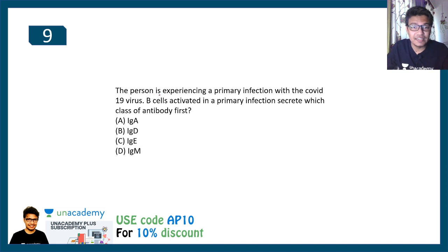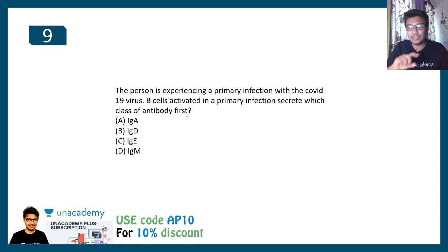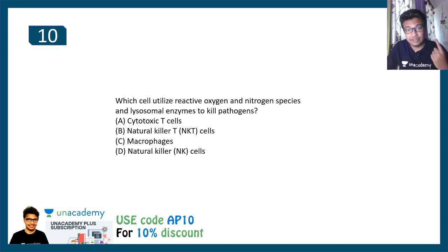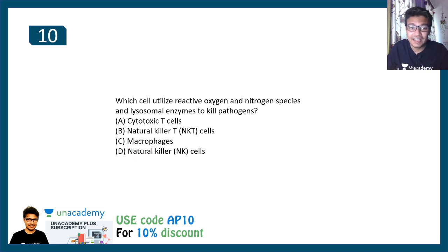Question nine: a person is experiencing a primary infection with COVID-19 virus. The B cells activated in the primary infection secrete which antibody first? We have already discussed this type of question previously — it's the same concept in a different format. Try to answer and comment below. For the last question: which cell uses reactive oxygen species, nitrogen species, and lysosomal enzymes to kill pathogens? Options are cytotoxic T cell, natural killer cell, or macrophages. Answer in the comments!